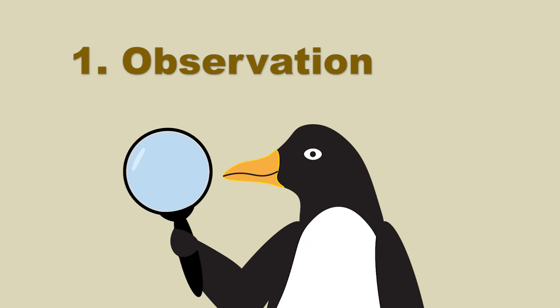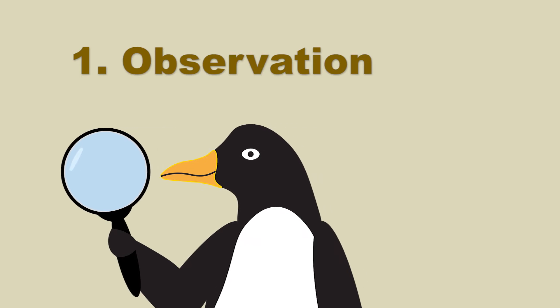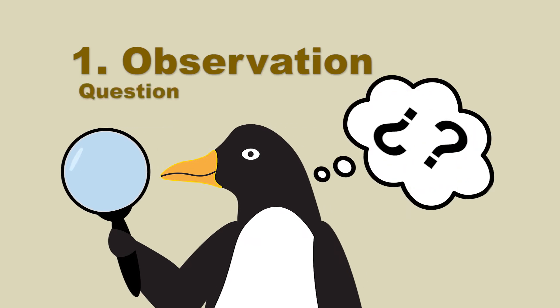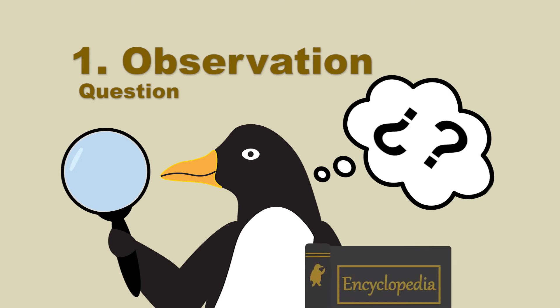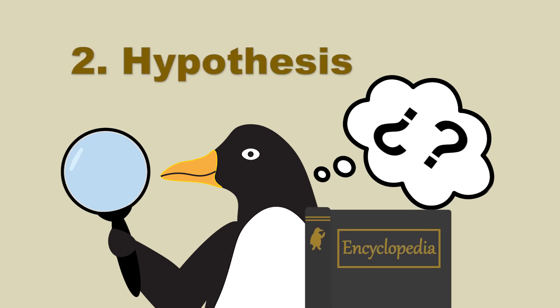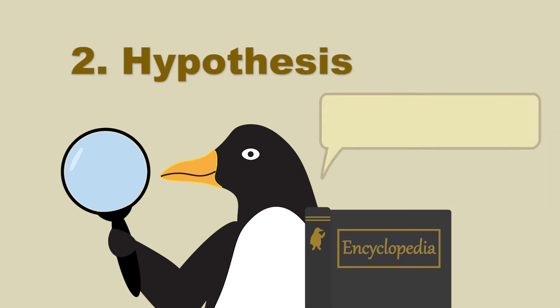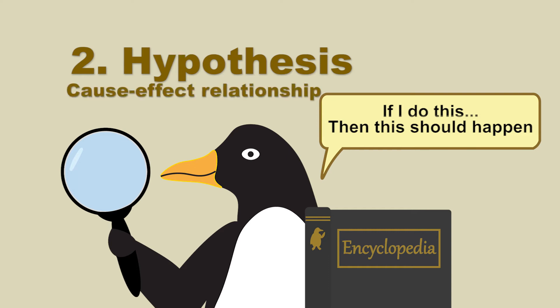As you may think, the process begins when someone observes a curious phenomenon and makes a question about it that still needs to be answered. By using all the previous knowledge on the topic, the researcher should develop a hypothesis, which is simply an educated guess of how the studied phenomenon should behave under specific circumstances. Thanks to it, it is possible to establish a cause and effect relationship, which will have to be tested.